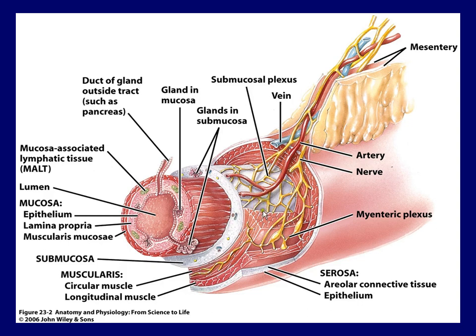The next layer is the muscularis — full of muscle. Typically two layers: a circular layer and a longitudinal layer. The stomach is an exception with three layers. Circular layers are like rings around the tube; longitudinal layers run along the length. Together they allow squeezing to smash food and inchworming to propel it forward — constantly propelling and mixing.